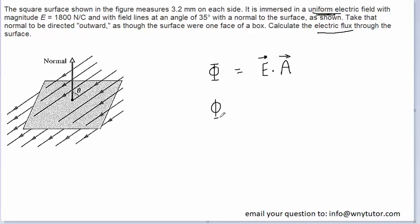A dot product can be rewritten in terms of magnitudes. So we can have the magnitude of the electric field multiplied by the area and then multiplied by the cosine of the angle between the electric field and the area vector.